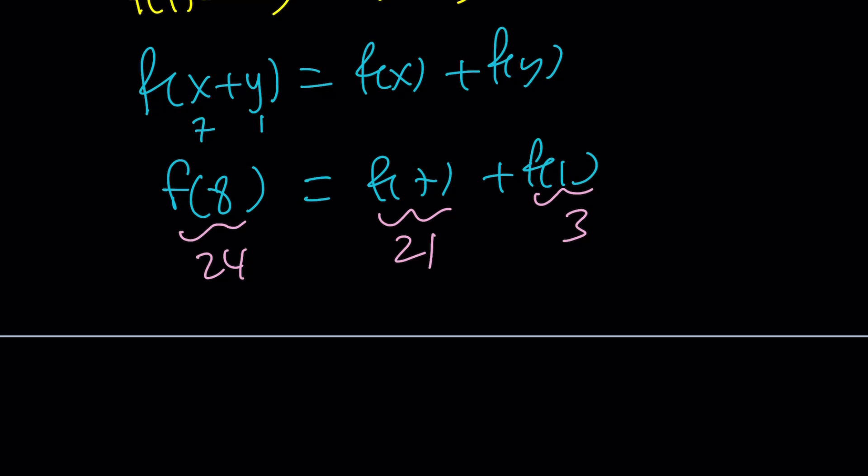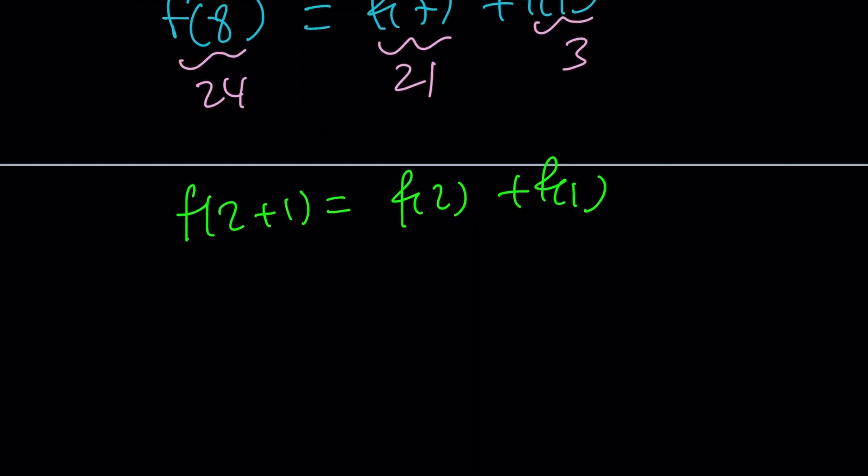I have f of 4. If I can find f of 3, then I'll be happy because that gives me f of 7. How do you find f of 3? Well, f of 2 plus 1 is f of 2 plus f of 1. You know the trick. I don't need to write the original equation again. This is f of 3, this is f of 2, and this is f of 1. But you know them.